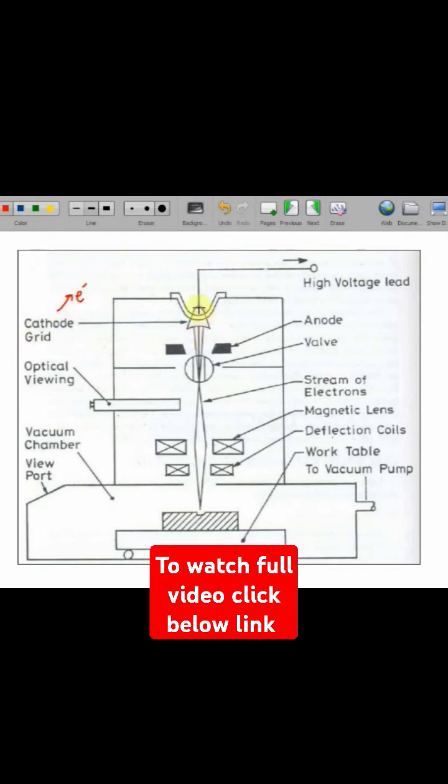Then we have an anode. The anode will attract all the electrons towards itself, and due to this attraction, the convergence of all the electrons takes place.